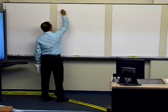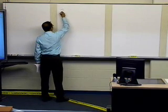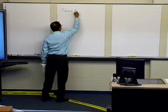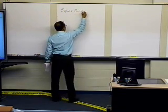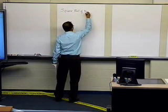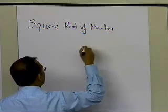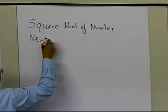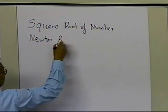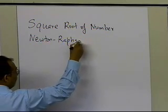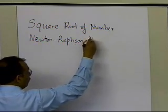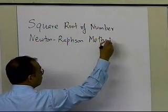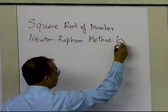In this segment we're going to talk about how to find the square root of a number. We're going to look at an example of how we find the square root of a number by using the Newton-Raphson method formula for finding the roots of an equation.